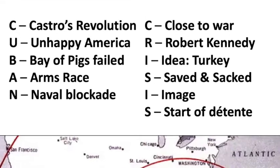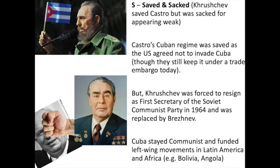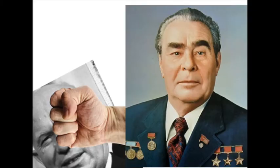Now the consequences of the Cuban Missile Crisis: S — saved and sacked. Who is saved? Fidel Castro. The agreement is that the Soviets will remove their missiles if America promises never to overthrow Castro — which, to be fair, they've stuck to; Castro was never overthrown by America, although Cuba remains under American economic sanctions. The sacked is Khrushchev: according to some in the Soviet Union, he appeared weak for this compromise, and in 1964 he is removed as First Secretary of the Soviet Communist Party and replaced by Brezhnev.